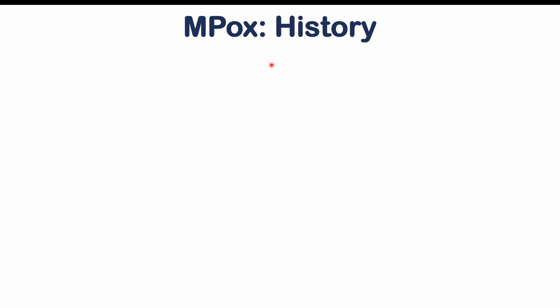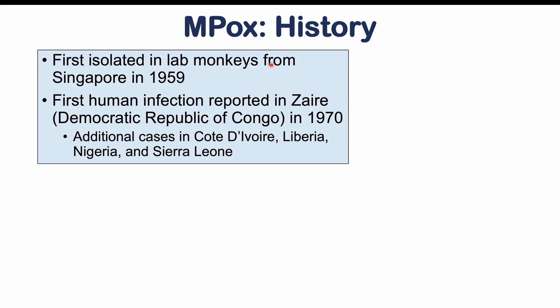Let's discuss a brief history of this virus. It was first isolated in lab monkeys sent from Singapore to Denmark in 1959 — those monkeys arrived and became ill, making this the first known case. This is why the term monkeypox came to be. The first human infection was reported in Zaire, which is modern-day Democratic Republic of Congo, in 1970.